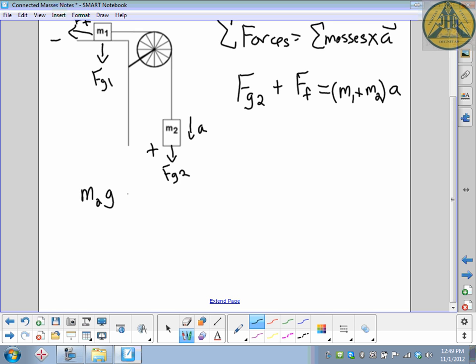Force of friction is negative, so it would be negative. M2g minus force of friction is the coefficient times the normal force. And that's equal to the sum of the masses.